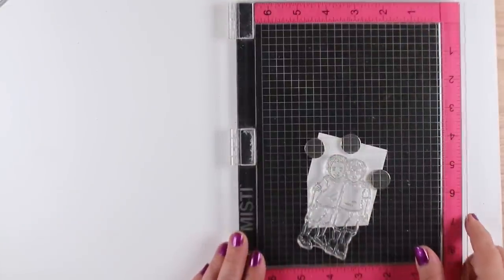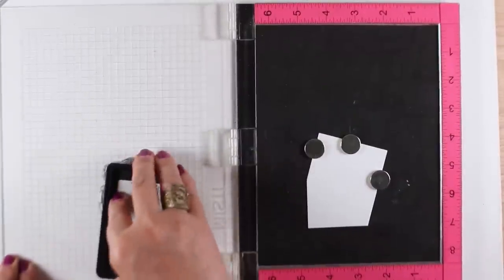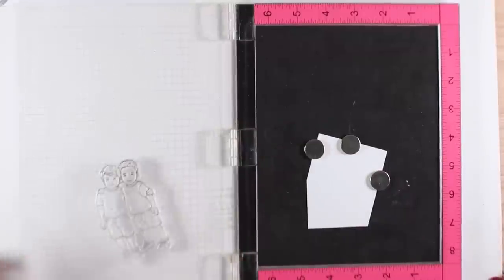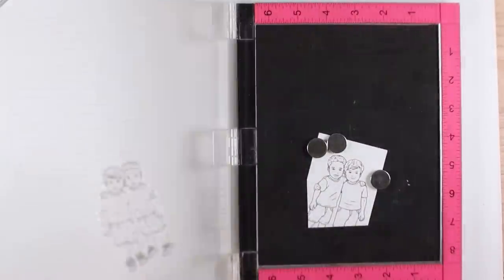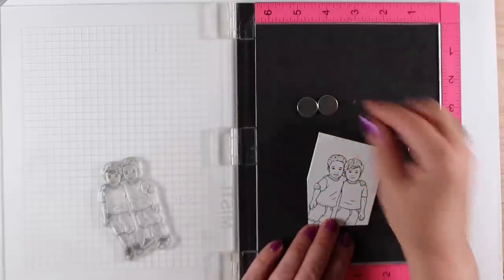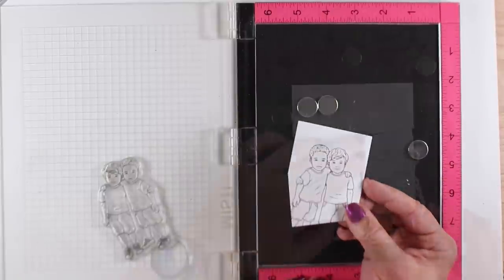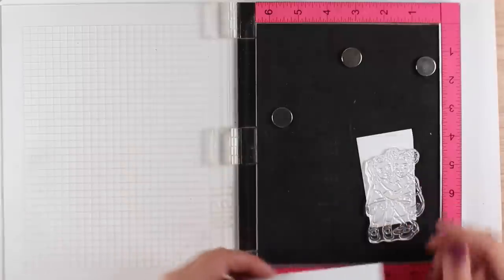I will pick the stamps up using the lid and then tap some ink on. I'm using Lawn Fawn Jet Black ink, which I can use for both watercolor and Copic. But I'm going to be coloring these with Copics today. And there I have my image ready to go.